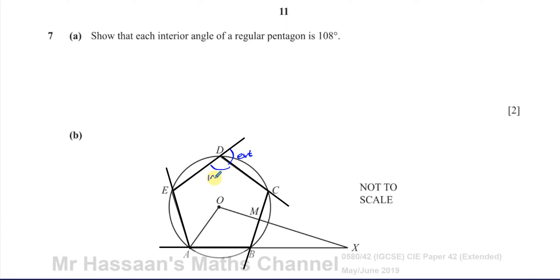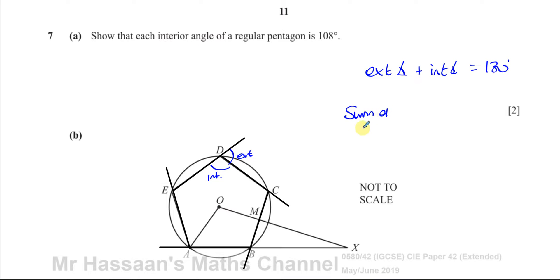The exterior angles would be these angles, and the interior angles would be those angles. Now, the exterior angle plus the interior angle on each corner make a straight line, so they add up to 180. What is special about the exterior angles is that in any polygon, the sum of exterior angles will always be 360 degrees, no matter how many sides the polygon has.